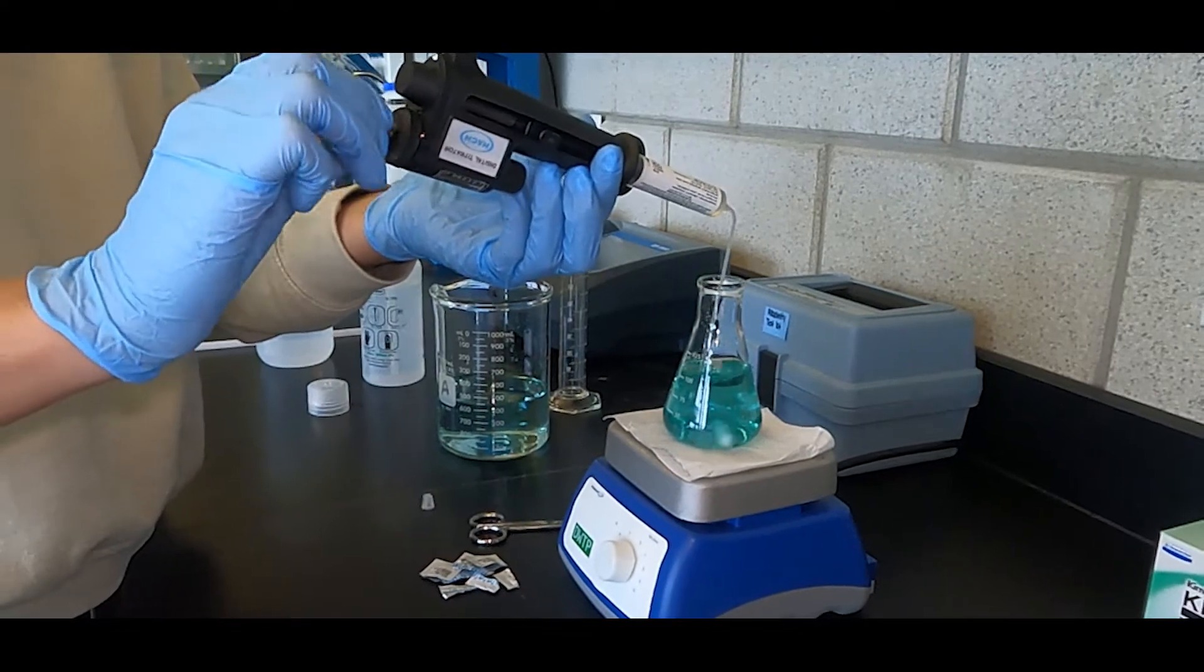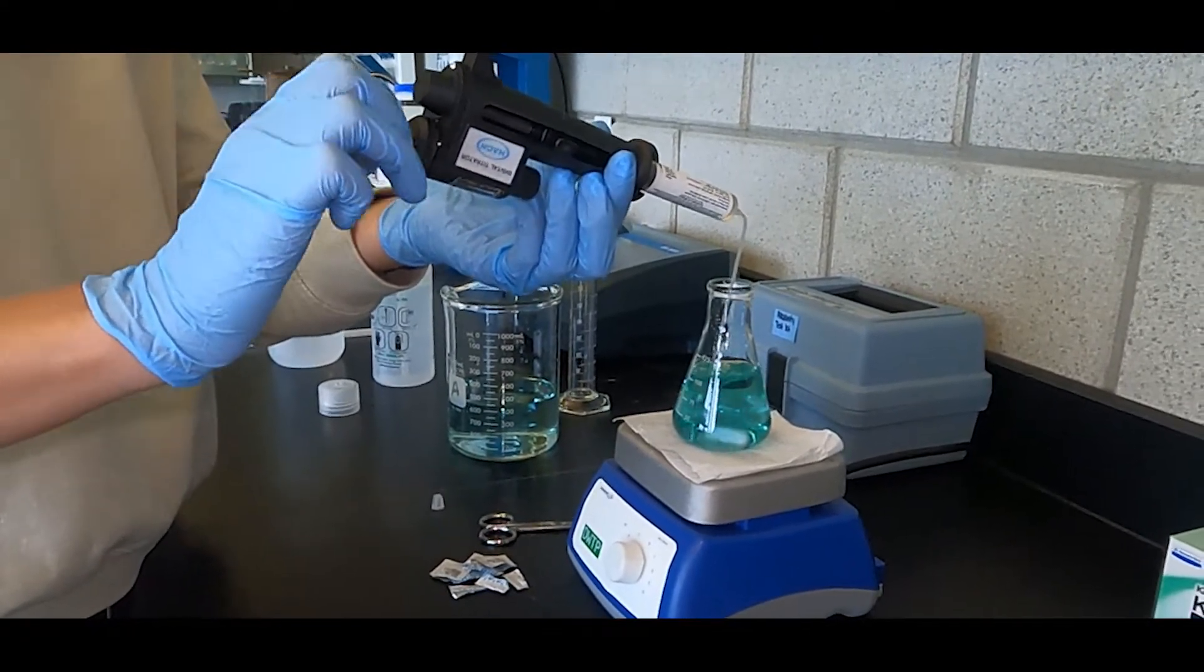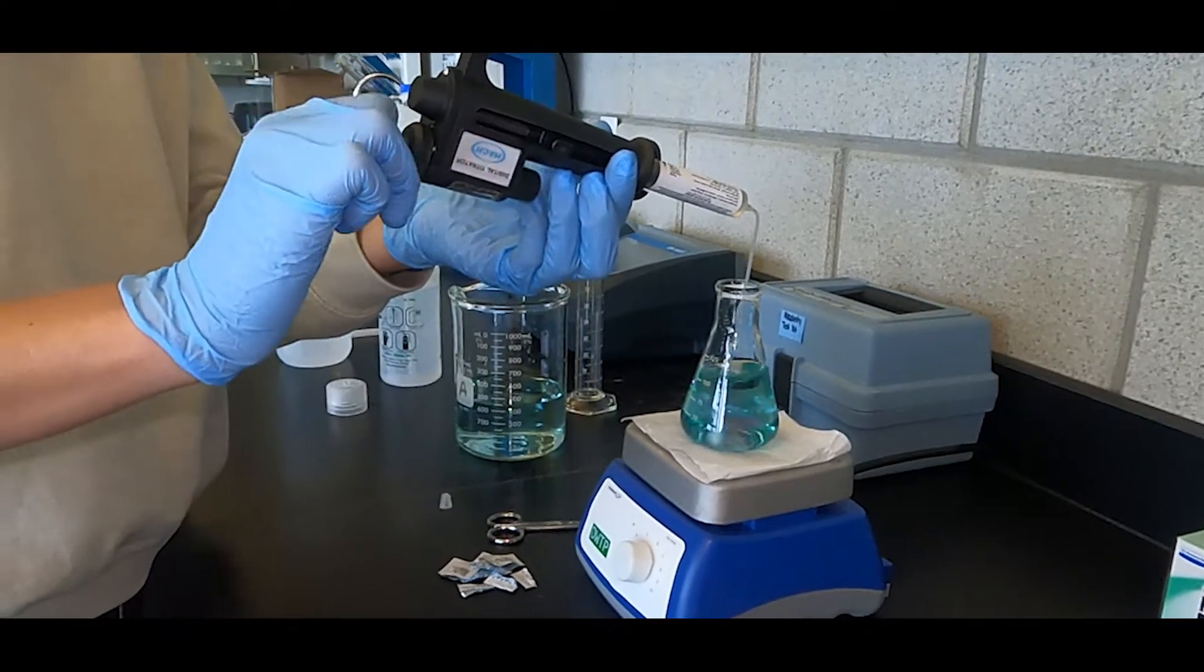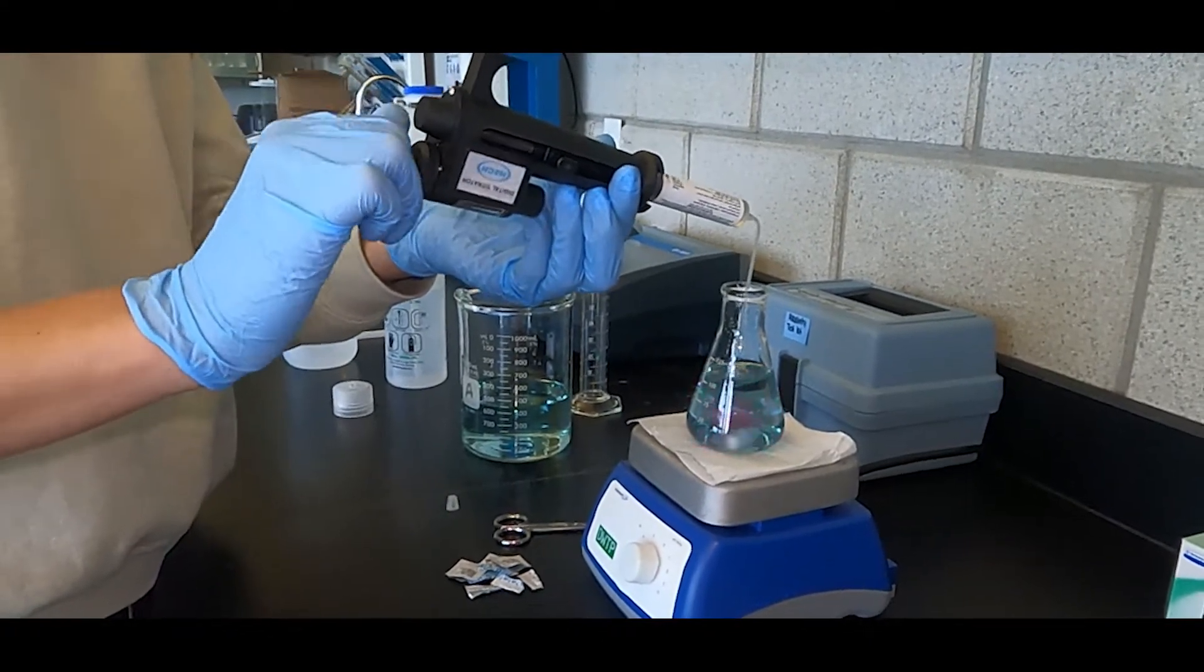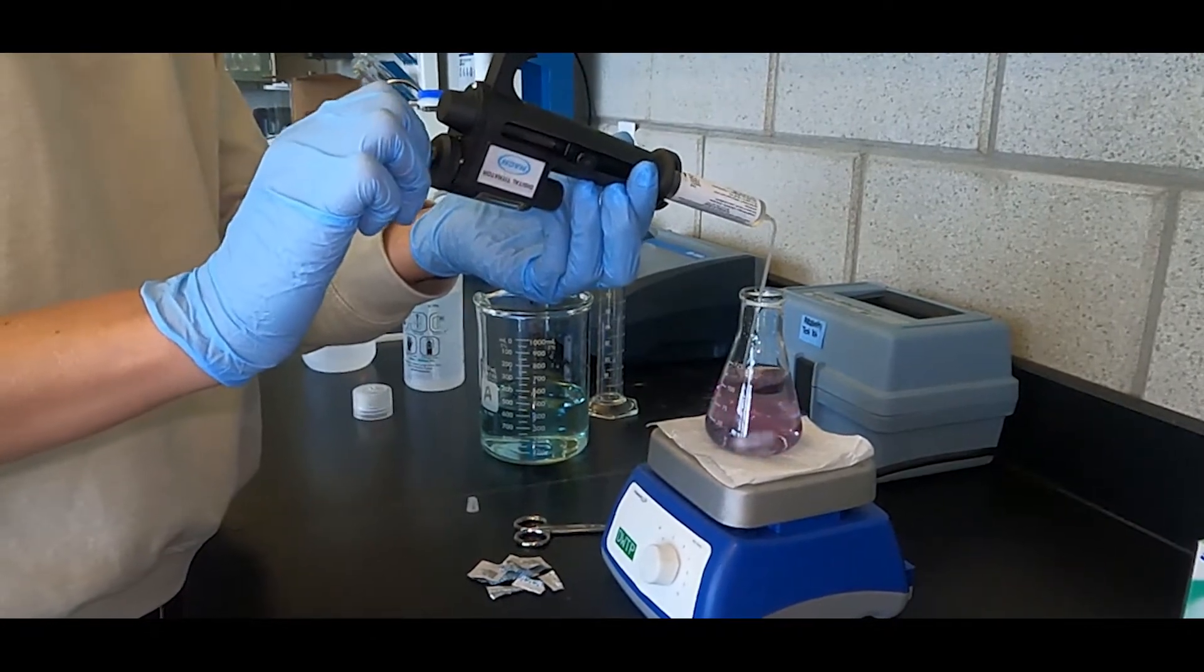During the titration, you will know you are approaching the endpoint when you start to see flashes of color change that persist for one second or more. It is advised to add acid slowly as you get closer to the endpoint to ensure you do not overshoot it.